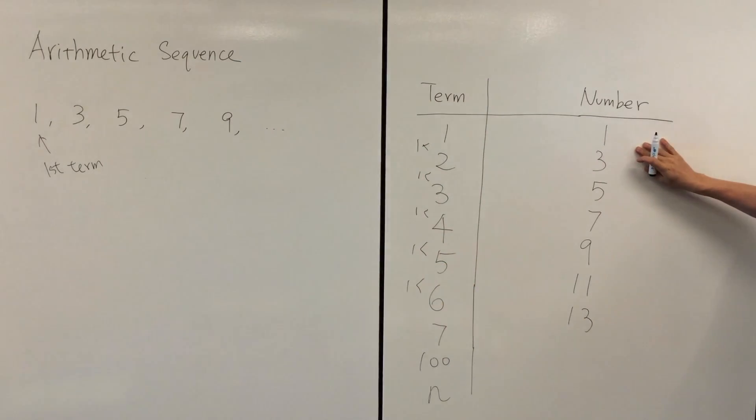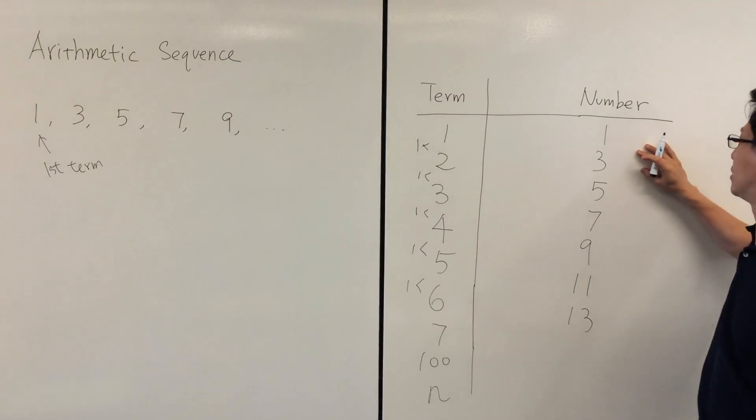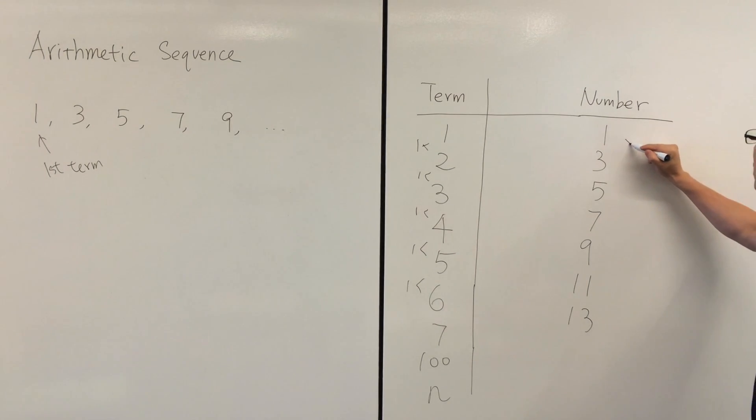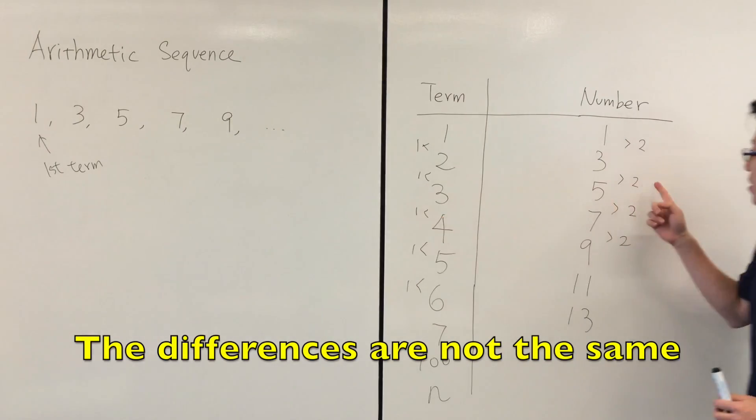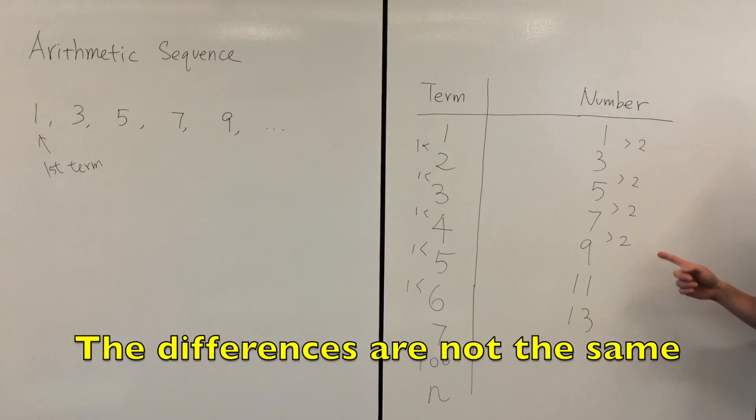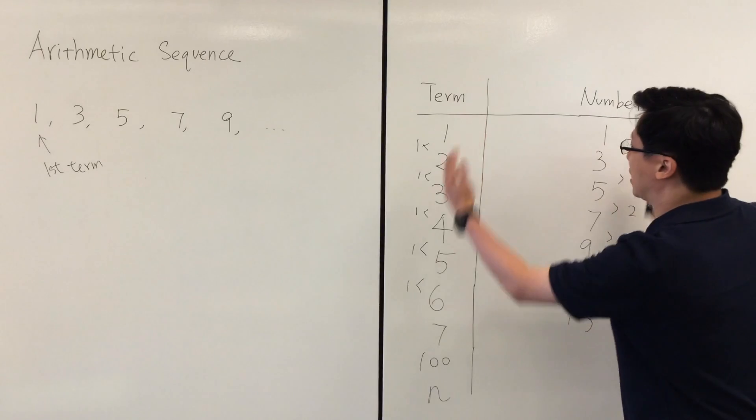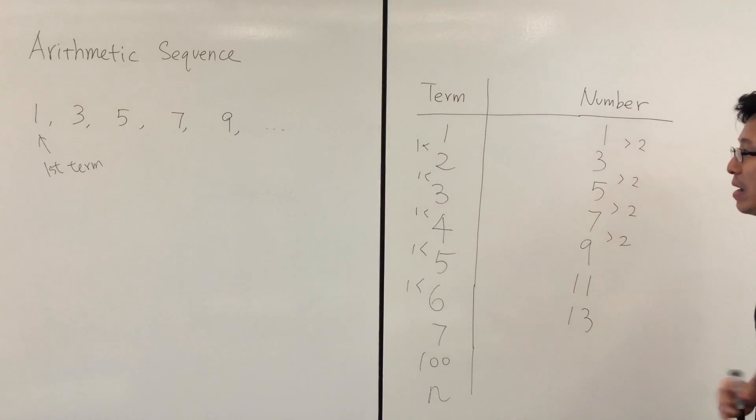But on the right hand side the numbers are different by 2. The difference between successive numbers is 2, so this difference is just not the same. So how can we make them have the same difference?